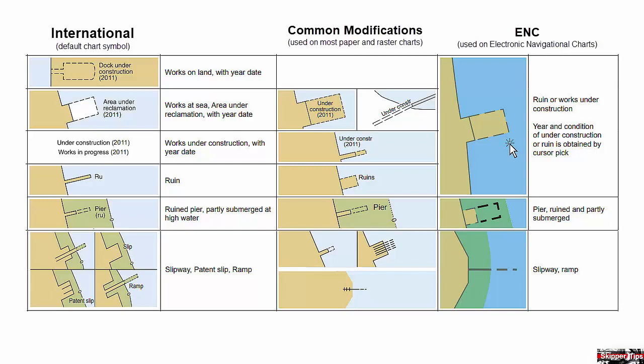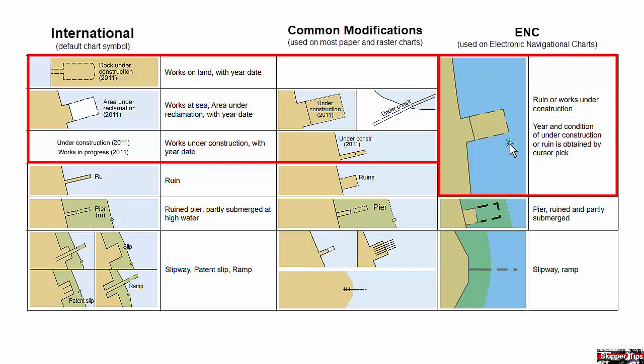The third column shows symbols found on electronic navigational charts, or ENC. Underwater construction, such as reclamation or landfill, shows the area enclosed by dashed lines. The date the construction began will sometimes be shown next to the symbol in parentheses. If you are using an ENC, you can hover your cursor over the symbol to get a pop-up dialog box for more information on the construction project.